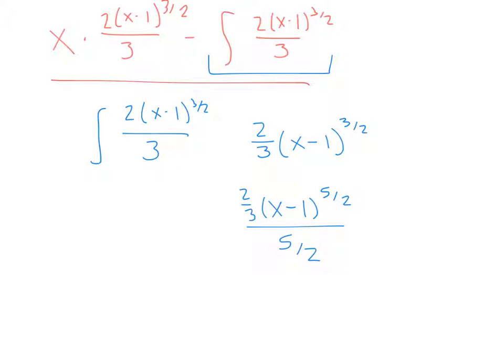Can't forget that. So now we're just going to take the reciprocal of this and multiply across. And so we have 2 fifths times 2 thirds, x minus 1 to the 5 halves. And so from there, we get 4 fifteenths x minus 1 to the 5 halves.